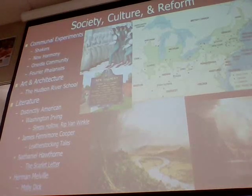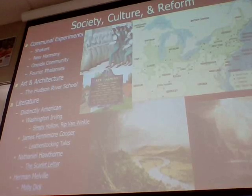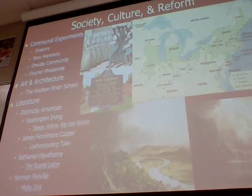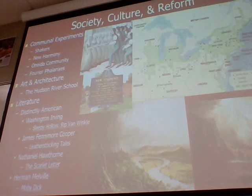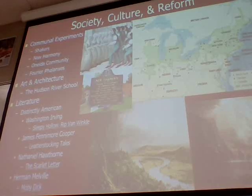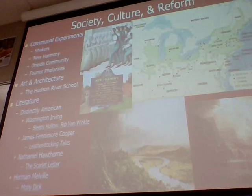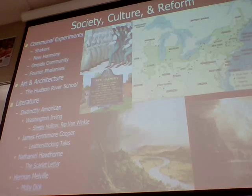The last communal experiment is the Fourierist Phalanxes. There was a guy named Charles Fourier, who was French — a French socialist — who developed this idea of another utopian society. He advocated sharing work and living spaces. But like many of the others, his communities died out pretty quickly by the 1840s.